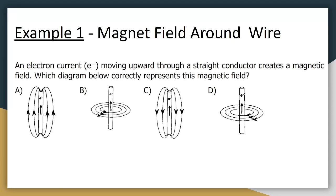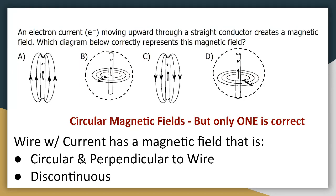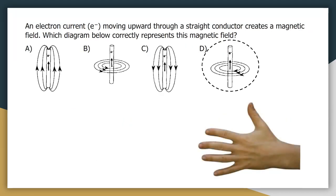Here is a practice question to test what you've learned. All four choices show a wire with current going upward. Right away you should be able to eliminate two answer choices. We can eliminate questions A and C because the magnetic field is not circular and perpendicular to the wire. The only two possible choices are B and D. The correct answer is D.